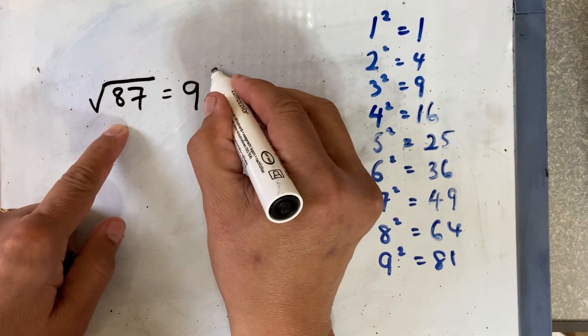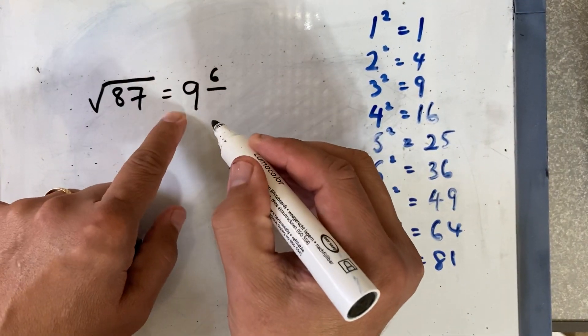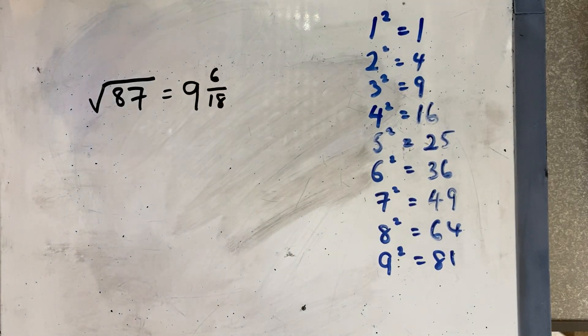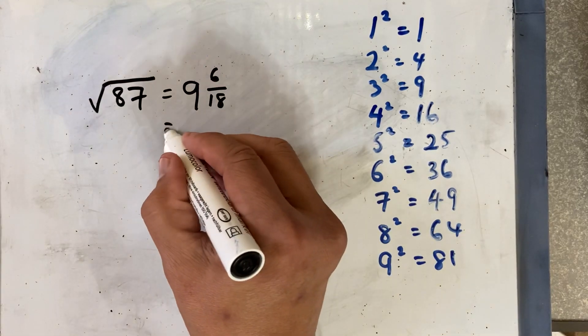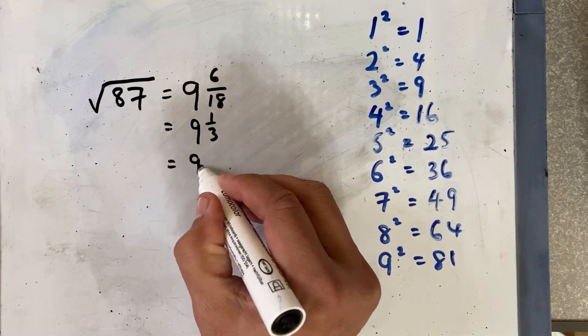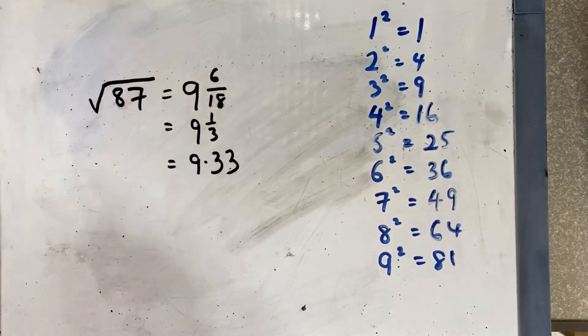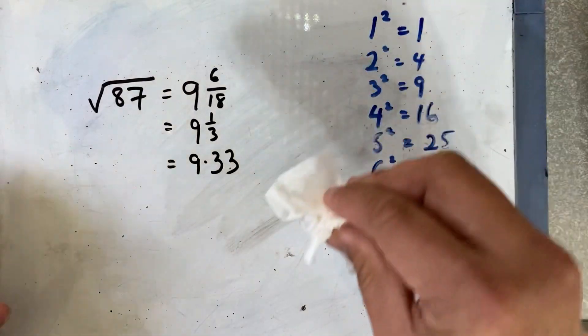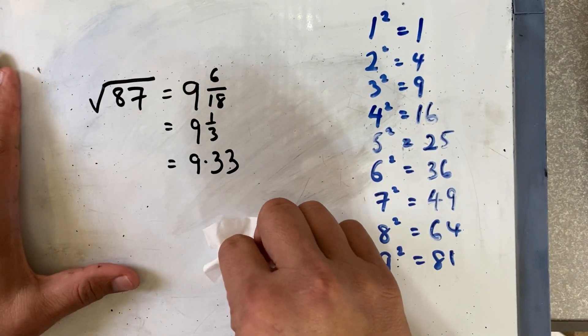So you put a 6 there, and then you double the whole number, which is 18. So it is going to be 9 and 6/18, or you simplify to 9 and one third, and the answer is going to be 9.33. That is how you estimate a square root in your mathematics work.